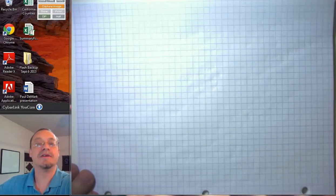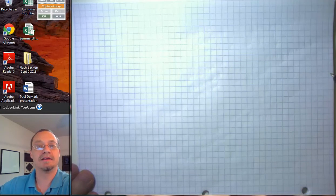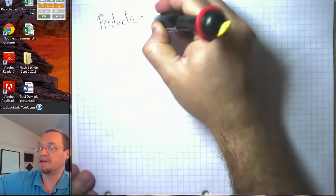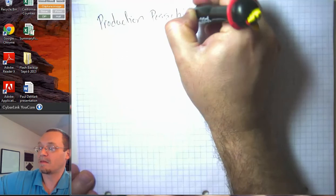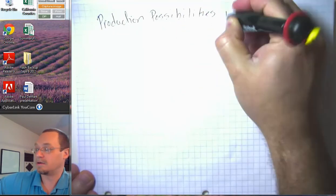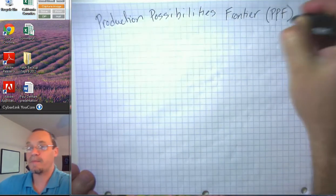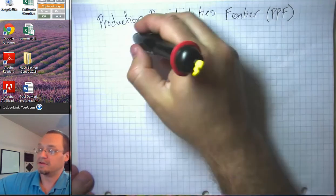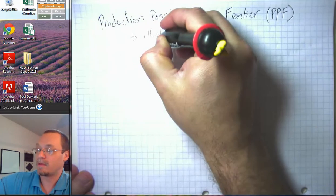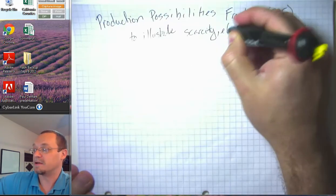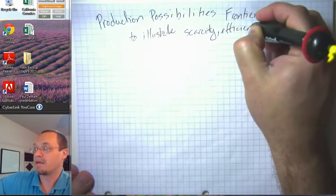In this video segment, I want to go ahead and talk about one of the first models that most economics textbooks talk about, and that's the idea of the Production Possibilities Frontier Model, or PPF. This is something economists like to use to illustrate scarcity, efficiency, and trade-offs.